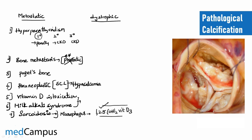To summarize the causes of metastatic calcification: first, hyperparathyroidism (primary, secondary, and tertiary); second, bone metastasis; third, Paget's disease of the bone; fourth, paraneoplastic syndromes; fifth and sixth, vitamin D intoxication and milk-alkali syndrome; and seventh — very importantly — sarcoidosis.